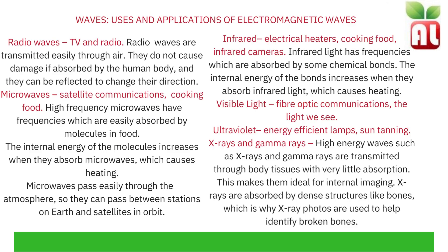Uses and applications of electromagnetic waves. Radio waves are used for TV and radio; they are transmitted easily through the air, do not cause damage if absorbed by the human body, and can be reflected to change their direction. Microwaves are used in satellite communications and cooking food. High frequency microwaves have frequencies which are easily absorbed by molecules in food, increasing their internal energy and causing heating. Microwaves pass easily through the atmosphere, so they can pass between stations on Earth and satellites in orbit. Infrared is used in electrical heaters, cooking food and infrared cameras, known as thermal imaging cameras.